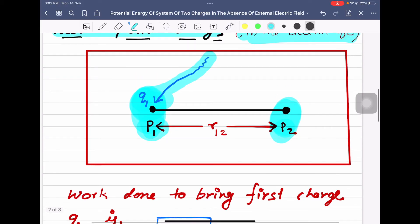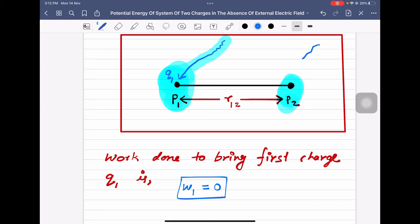here initially at P1, potential was not there, because there was no external electric field. Now you have placed Q1 at P1, so it is producing some electric field at P2. That work done in bringing charge Q2 and placing it at P2, I call it W2.